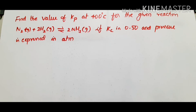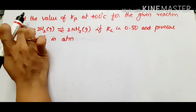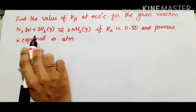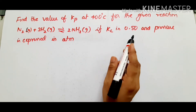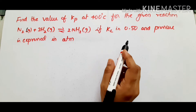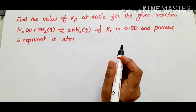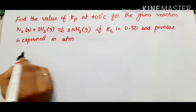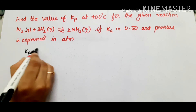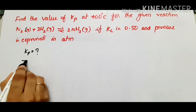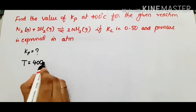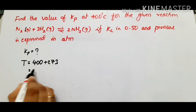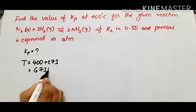First example: find the value of Kp at 400 degree centigrade for the reaction N2 gas plus 3H2 gas reversible reaction to 2NH3, if Kc is 0.50 and the pressure is expressed in atmosphere. Given data: temperature is 400°C, which equals 673 K. Kc equals 0.50.